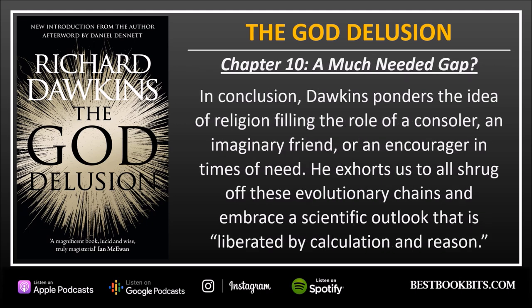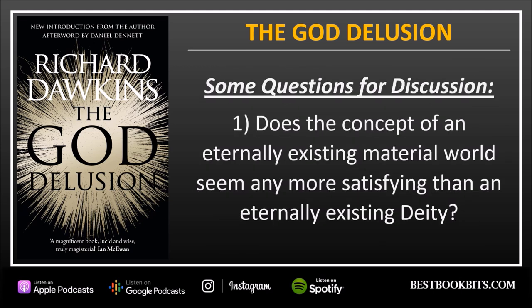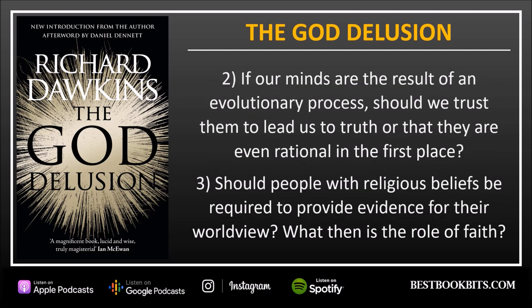Chapter 10: A Much Needed Gap. In conclusion, Dawkins ponders the idea of religion filling the role of a counselor, an imaginary friend, or an encounter in times of need. He exhorts us to shrug off these evolutionary chains and embrace a scientific outlook liberated by calculation and reason. Discussion questions: Does the concept of an internally existing material world seem any more satisfying than an internally existing deity? If our minds are the result of an evolutionary process, should we trust them to lead us to truth? And should people with religious beliefs be required to provide evidence for their worldview — what then is the role of faith?